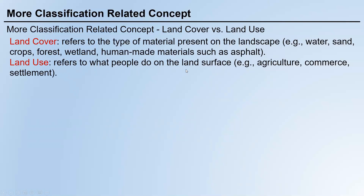Land use refers to what people do on the land surface. For example, agricultural land is a type of land use, but within that land use area there could be multiple land covers: water, grass, sand, wheat, corn, and other crops. So land use is a more general concept.